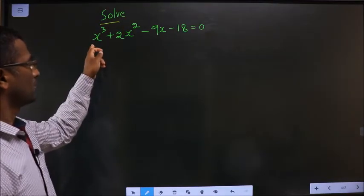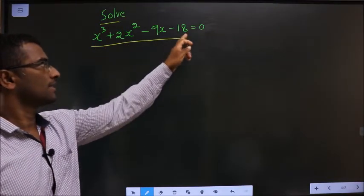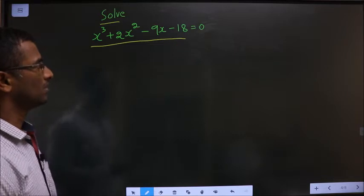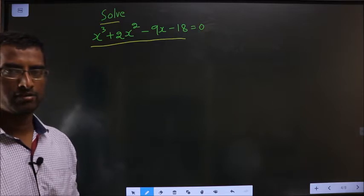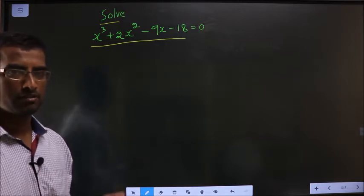Solve x cube plus 2x square minus 9x minus 18 equal to 0. Whenever they told you to solve, you need to find the value of x. How do we solve it?